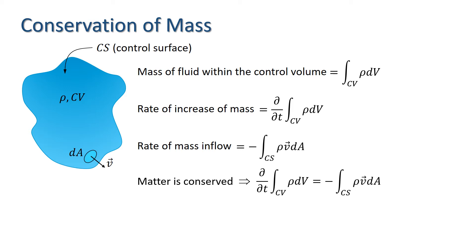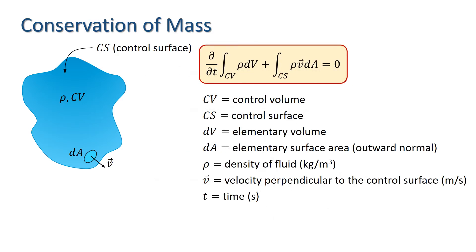Rearranging this gives us the equation describing conservation of mass. To reiterate, this equation simply states that the rate of increase of mass within a control volume is equal to the net rate of mass inflow to the same control volume through the control surface.